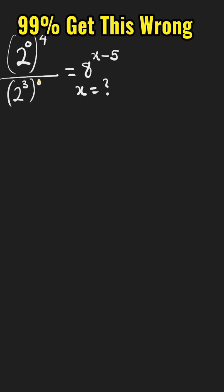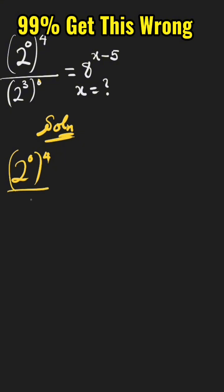We start by writing the solution: 2 raised to the power of x raised to the power of 4, all over 2 raised to the power of 3x raised to the power of 0, is equal to 8 raised to the power of x minus 5.